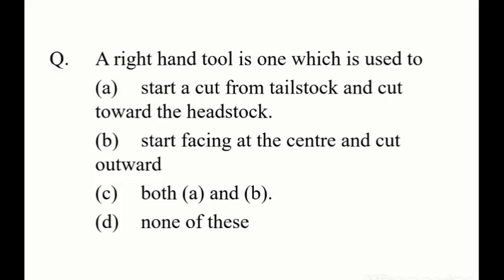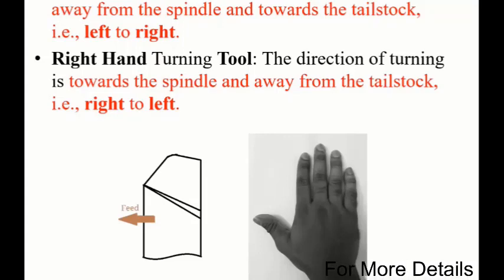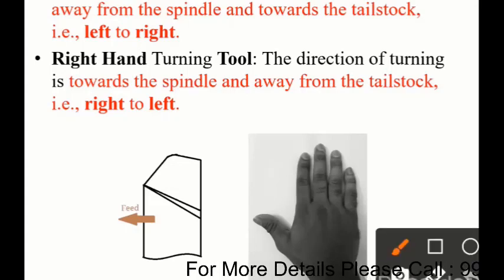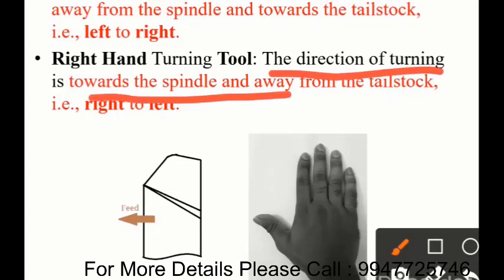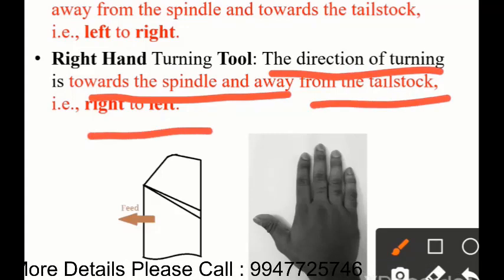If we are talking about a right hand tool, the direction of cutting is towards the spindle and away from the tailstock - that is right to left.